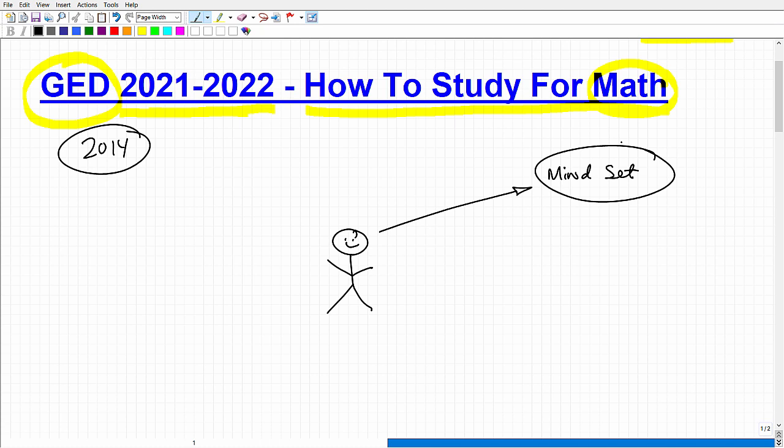What does that have to do with math? Well, that has everything to do with math because this is probably the number one area where students defeat themselves. A lot of students have this programming, and I can understand why. It's normal for human beings. The mindset is: I am not good at math. I was terrible at math. I hate math. There's no way I can pass math. If you have this mindset, that is going to be like a gigantic rock on top of your brain that's going to suppress your ability to learn. You have to change this mindset.